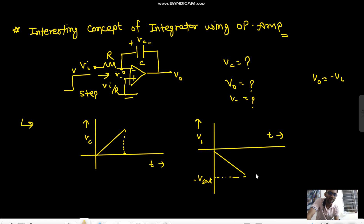At this time, let us assume the output saturates. The output is basically minus Vc, as we all know. So at this time you will get minus Vsat. Let me call this time t-naught.